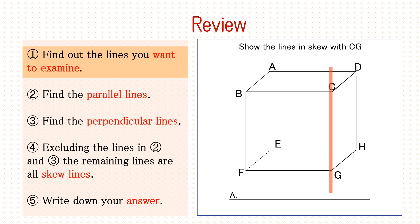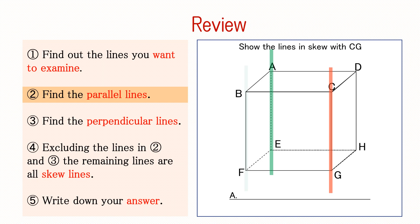Finally, let's review what we have learned. Skew lines are a pair of lines that are not parallel nor perpendicular. First, identify the line you wish to examine. In this case, since we are considering line CG, it will be in this red area. Next, let us find the line parallel to line CG. Lines CG and BF are parallel because they lie on the plane BFGC and do not intersect. Line CG and line DH are also parallel since they lie on the plane CGHD and do not intersect. Furthermore, line CG and line AE are also parallel since they lie on the plane AEGC and do not intersect. In short, the lines parallel to line CG are lines AE, BF, and DH.